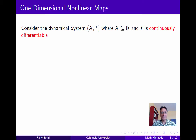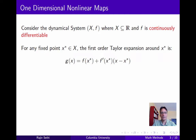So let's begin with one-dimensional non-linear maps. Consider the dynamical system (x, f), where x is a subset of the real numbers and f is continuously differentiable. Now for any fixed point x-star of this system, let's consider the first-order Taylor expansion around x-star, which we'll denote by g. This is just the Taylor expansion with all second-order and higher terms deleted.